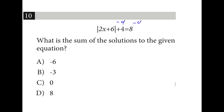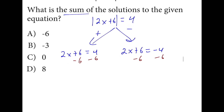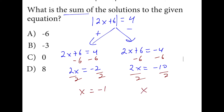First, we subtract 4 from both sides to get the absolute value bracket all by itself. Then we split into the positive and negative solutions and add them together. So we have 2x plus 6 equals 4, and 2x plus 6 equals negative 4. We subtract 6 from every side: 2x equals negative 2 and 2x equals negative 10. Dividing everything by 2 gives x equals negative 1 and x equals negative 5. Adding those together gives negative 6.